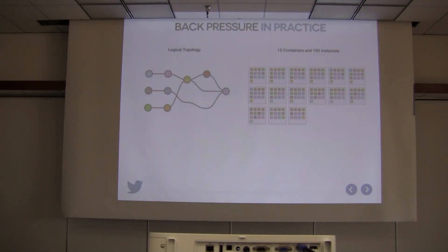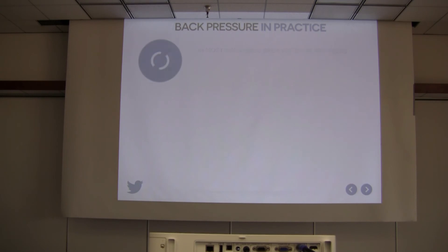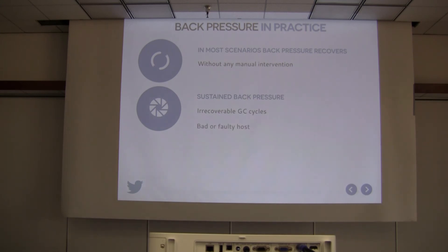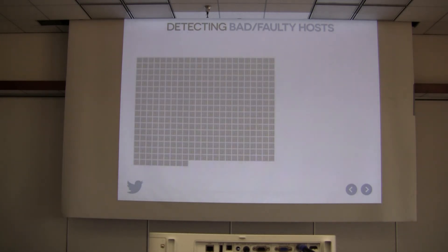That approach works well in practice and is what we've put into production. When back pressure occurs, there's a difference between write and read pointers — that lag is measurable. In cases of sustained back pressure due to GC, we restart that particular container. Sometimes users prefer dropping data for certain topologies, and we also use Heron topologies to detect bad hosts, feeding back to detect stragglers and remove those nodes.